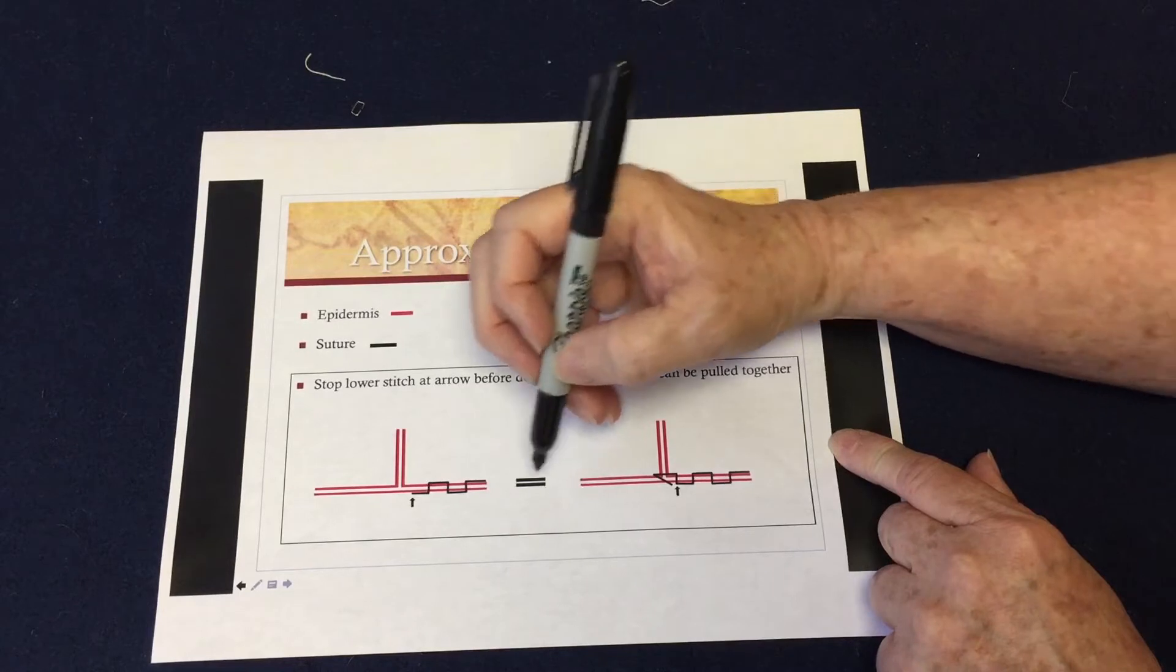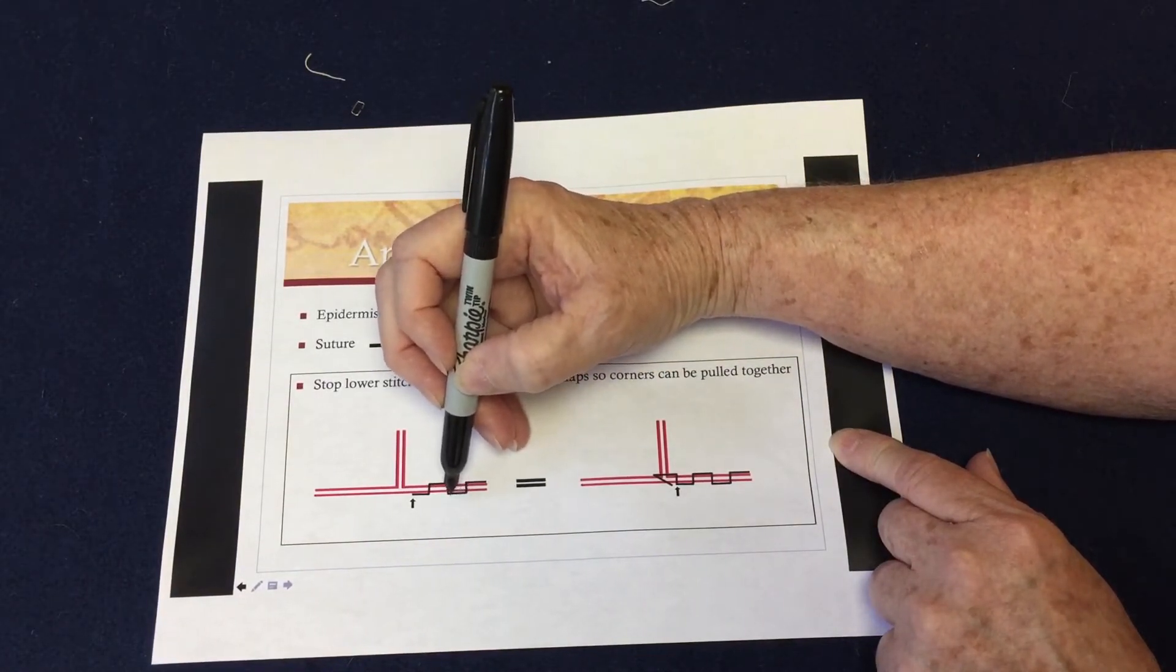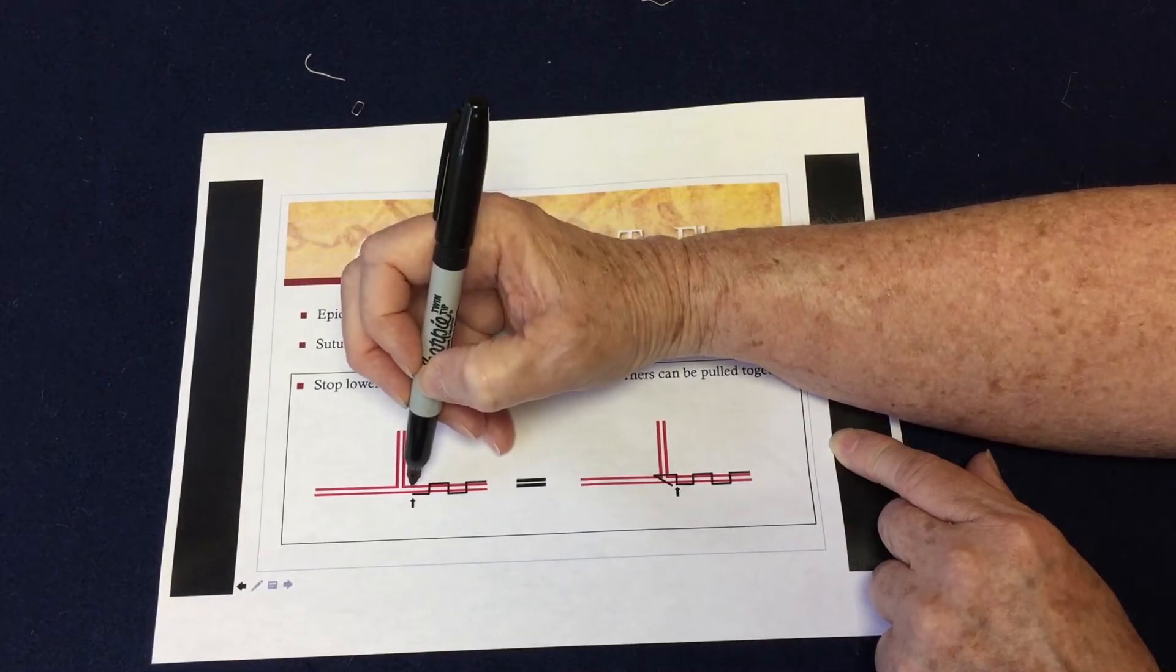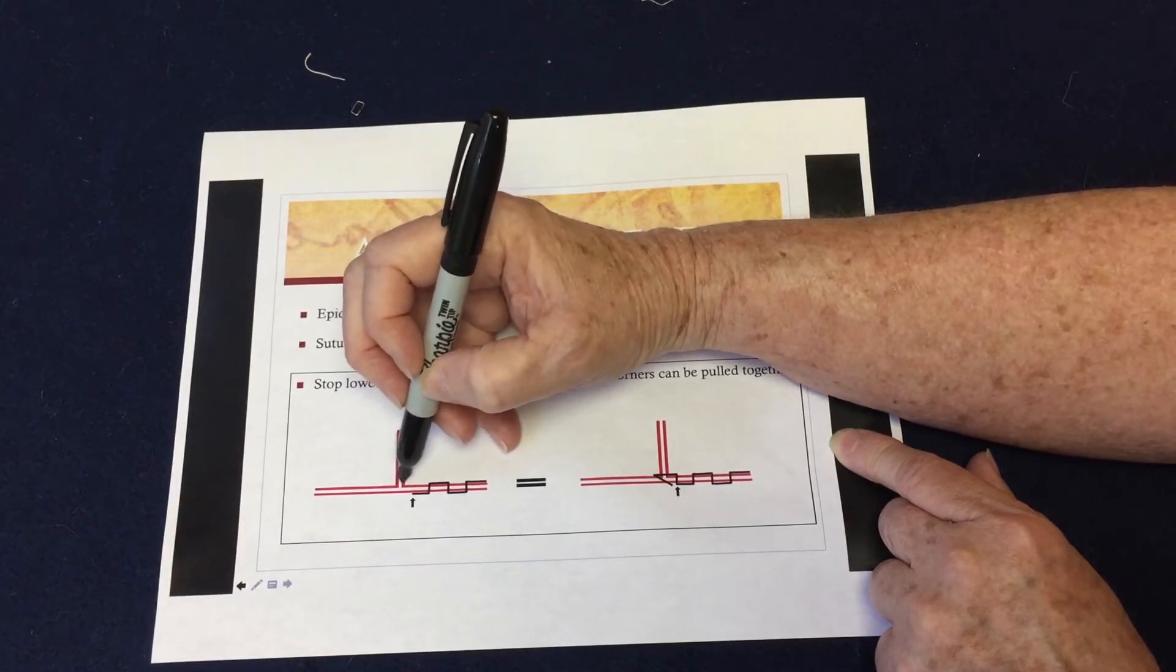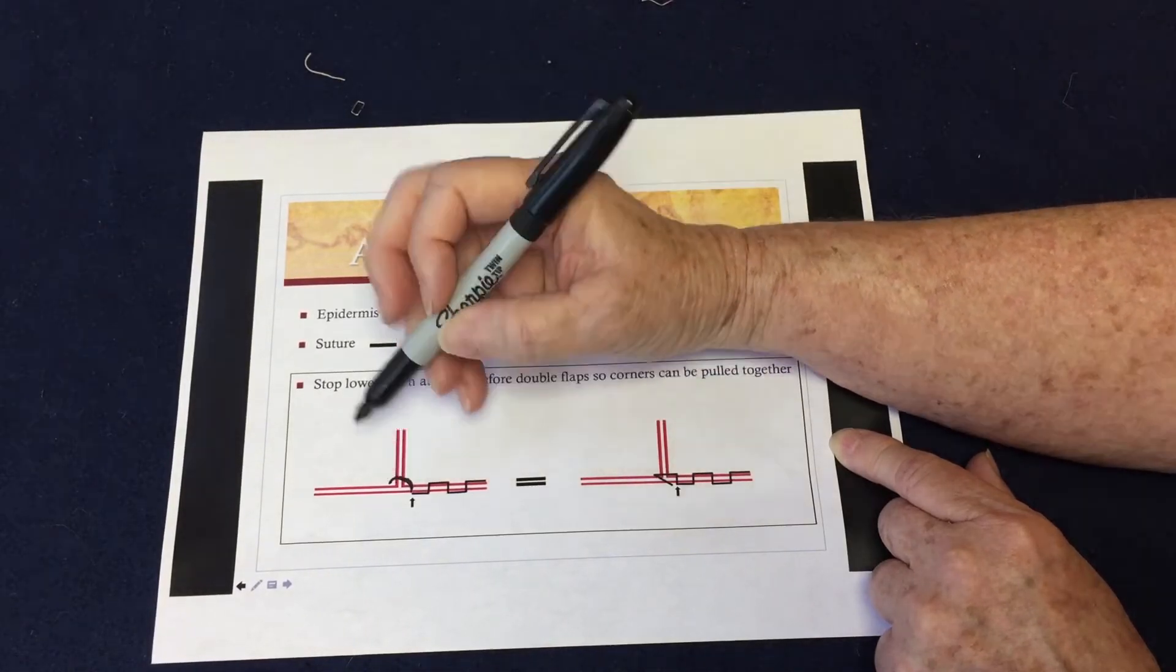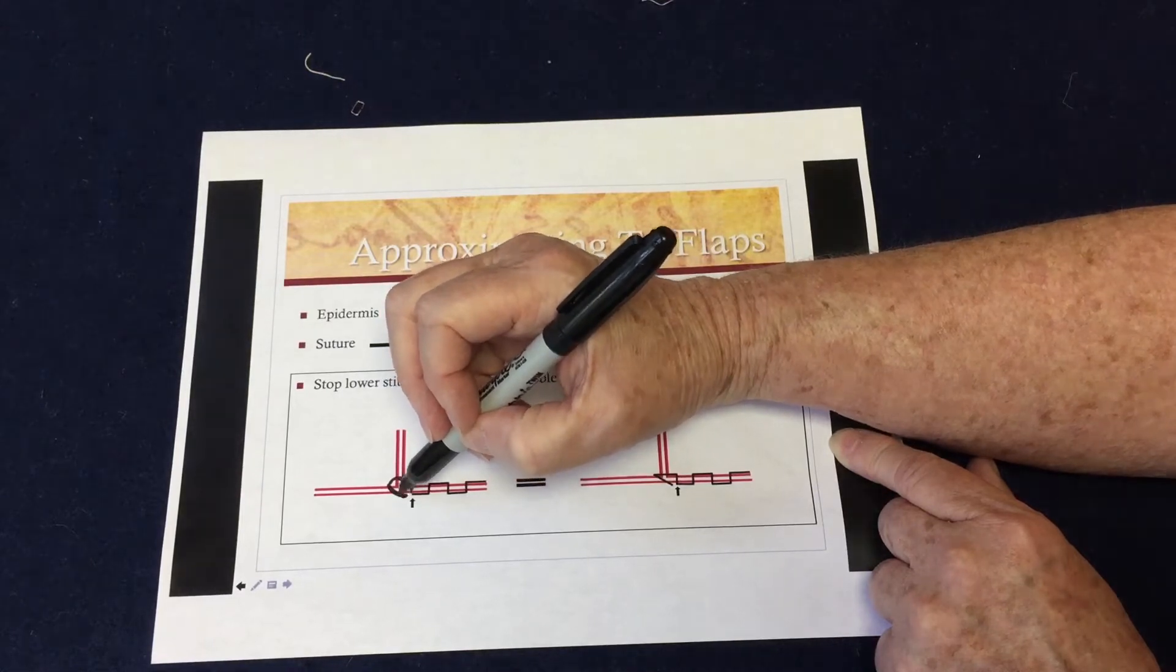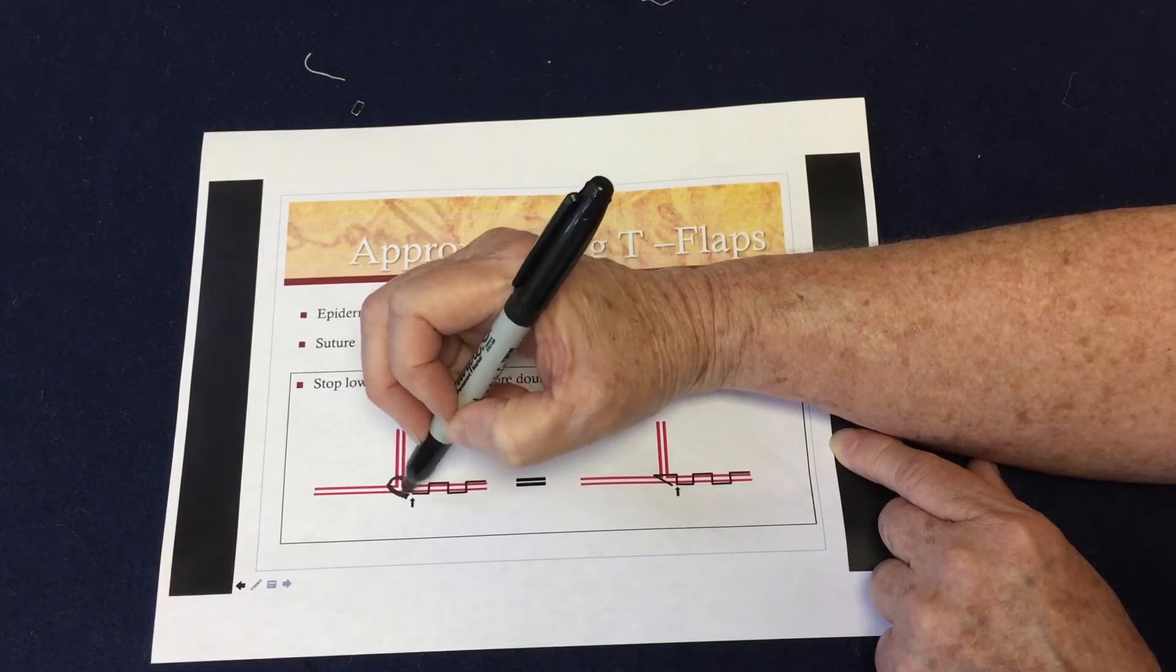So what you want to do is you want to go along this side, then that side, and up on this side. You want to stop like two to three millimeters away from the T here, the double flap. And then you want to go up and you want to go through the double flap with the next stitch, and then come back and start your next bite on the lower one, back here, beyond where that was.